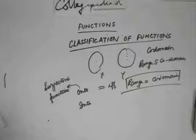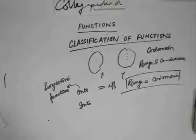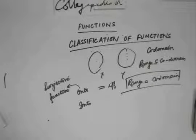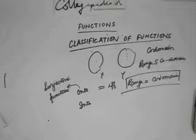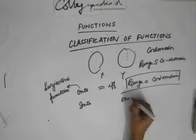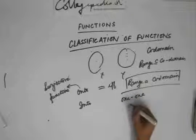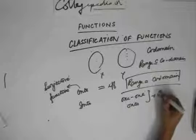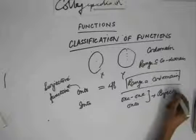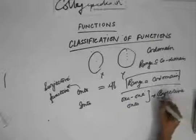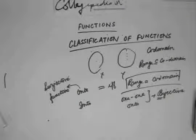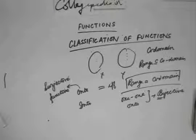So we had two classifications: first, one-to-one and many-to-one, depending on how the image was decided. The other classification is onto and into functions, depending on what the range is. A function which is both one-to-one and onto is known as a bijective function. 'Bi' means two — it satisfies two properties, surjective and injective, so it's called a bijective function.